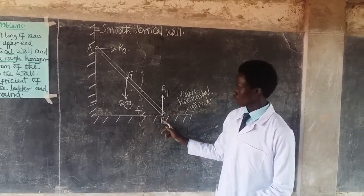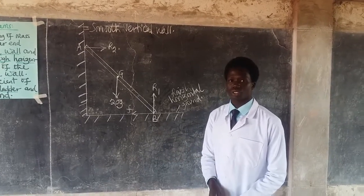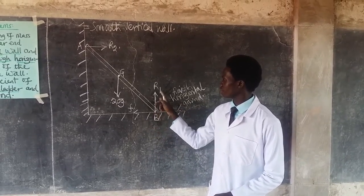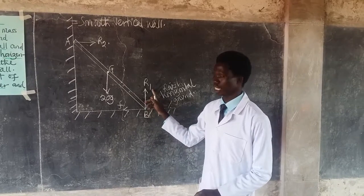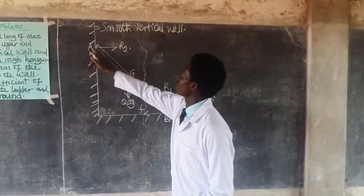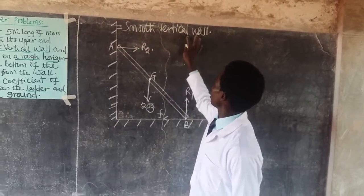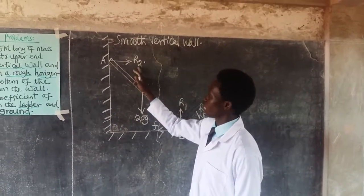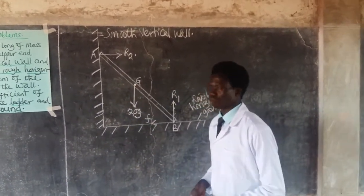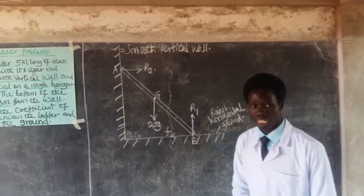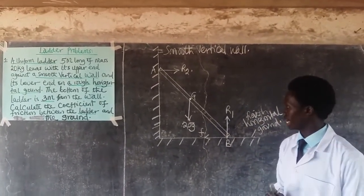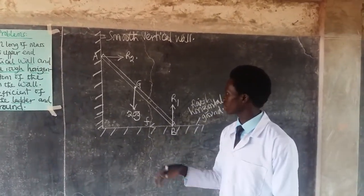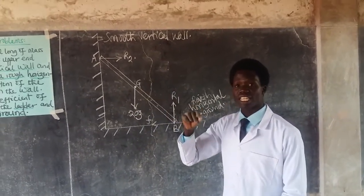Since the wall is smooth, there is no friction there. Since the ground is rough, friction acts inwards and we call it F. The horizontal ground offers a normal reaction R1 at point B, and the wall offers a normal reaction R2 at point A. The ladder is 20 kilograms and is uniform.